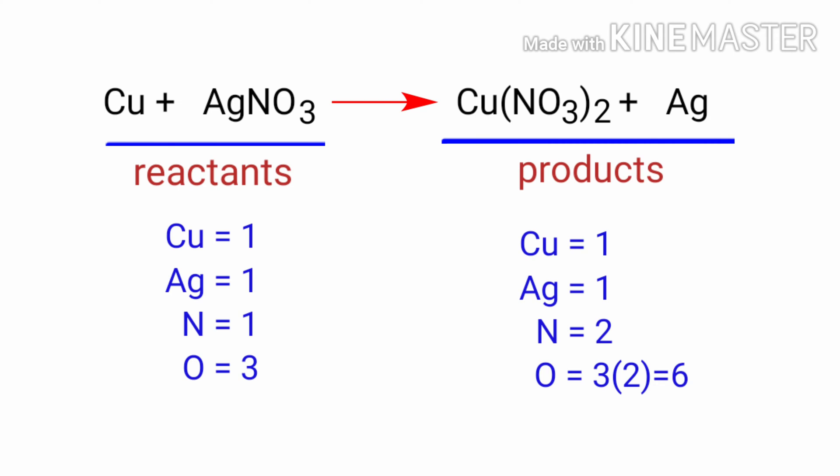In the reactants side there are one copper atom, one silver atom, one nitrogen atom and three oxygen atoms. On the products side there are one copper atom, one silver atom, two nitrogen atoms and six oxygen atoms.